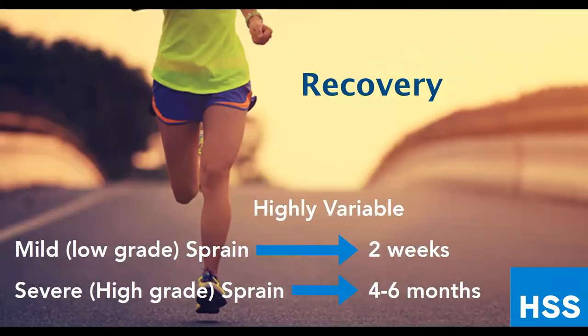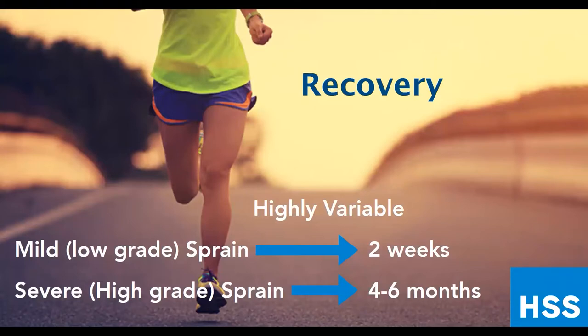How long does it take to recover and return to sports? After an ankle sprain, it's highly variable and depends on how bad the injury was. A mild or low-grade sprain — where you've partially torn one or two ligaments or just stretched them — can usually be recovered from quickly, with return to sports within two weeks. For a more severe or high-grade sprain where multiple ligaments are completely torn, possibly with bone bruises, it may take four to six months before you can return to sports.